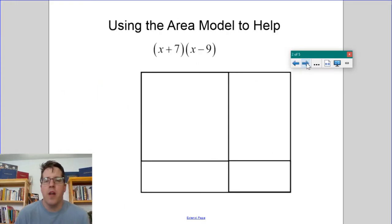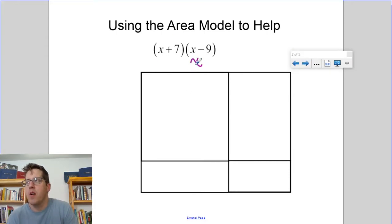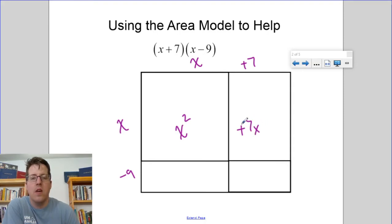We can use the area model to help both going forwards and going backwards. So remember, the area model was writing out x plus 7, x minus 9, and then multiplying in these four quadrants or boxes. So x times x is x squared, x times positive 7 is plus 7x, and x times negative 9 is minus 9x.